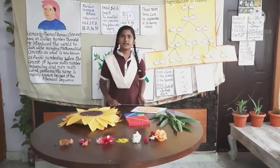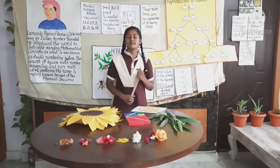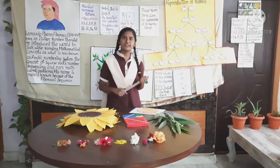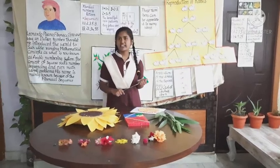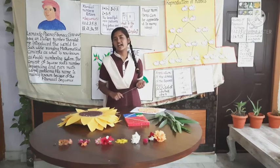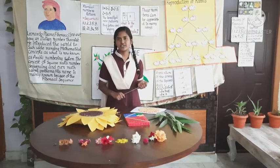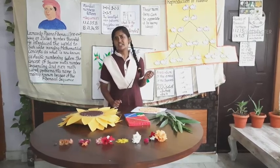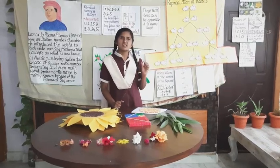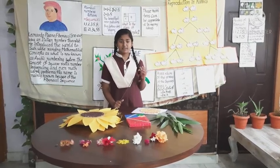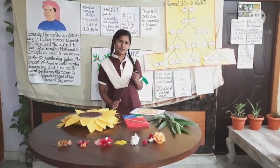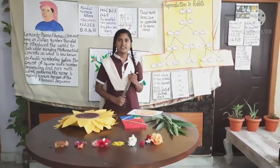Let us conclude the topic. Fibonacci numbers are nature's numbering system. The golden ratio and Fibonacci numbers are found everywhere in nature. If we observe nature, we will find many examples of the golden ratio and Fibonacci numbers — from single-celled organisms and a small wheat grain, to the leaf arrangement in plants, the florets of flowers, and many more. Thank you.